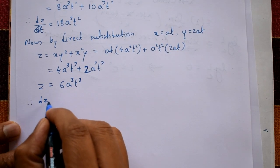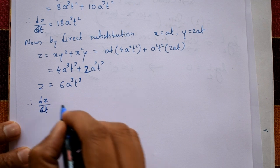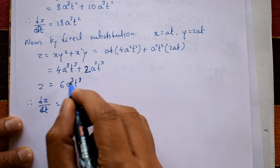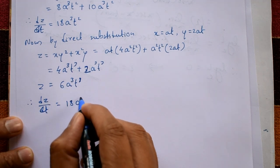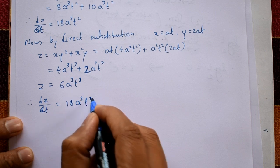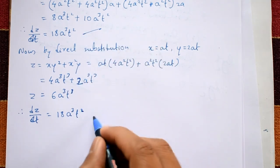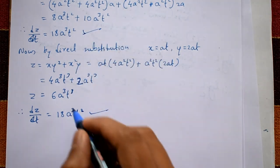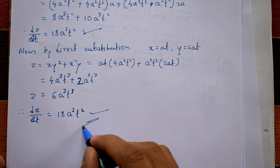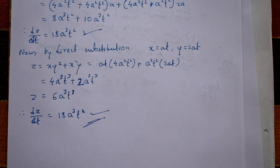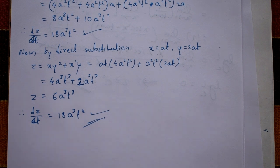Now differentiating z = 6a³t³ with respect to t: dz/dt = 18a³t². Comparing with the first result, both give dz/dt = 18a³t². These two results are the same, so the result is verified.